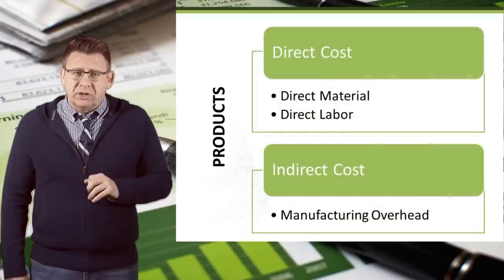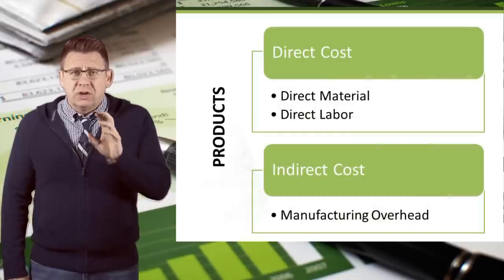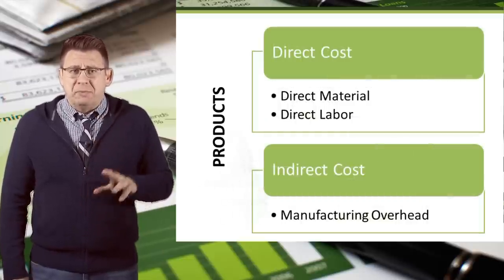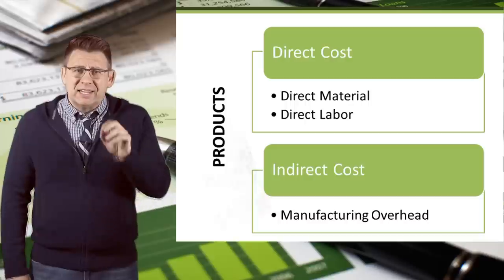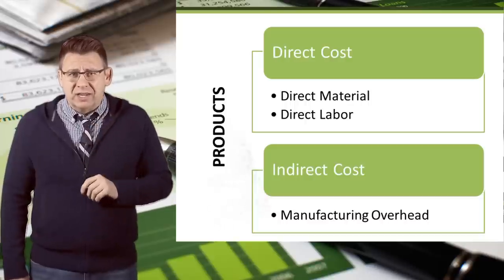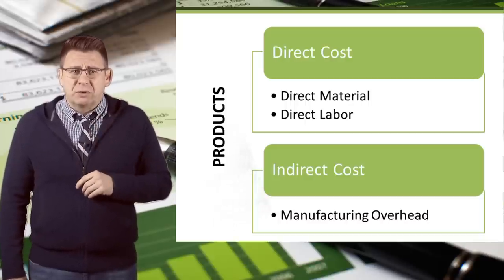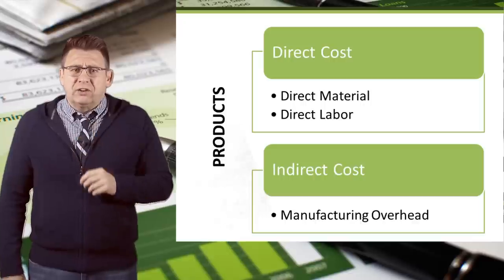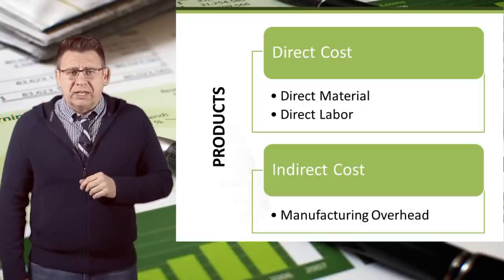So direct materials and direct labor are direct costs, and manufacturing overhead is an indirect cost, which needs to be allocated to the products. You'll learn how to do that in future video podcasts.